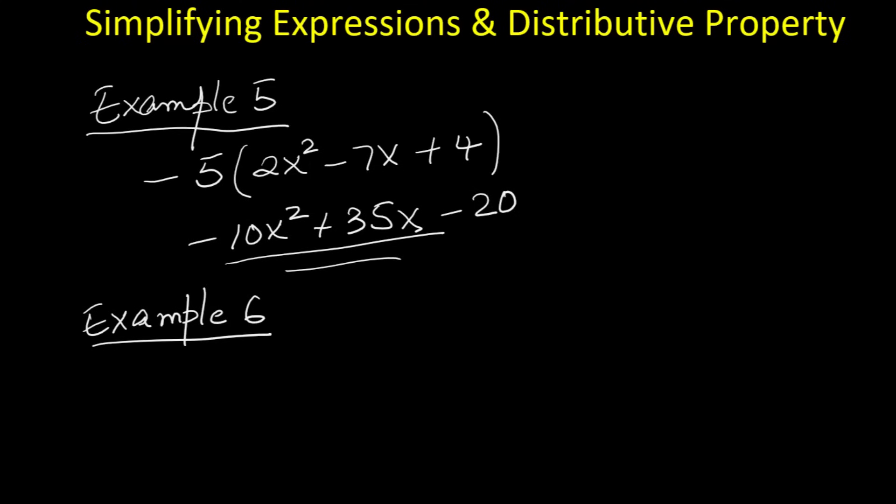Example 6. Now let us do a slightly longer problem: 3 times the quantity 4x plus 5 minus 2x plus 7. Step 1: Distribute the 3. 3 times 4x is 12x. 3 times 5 is 15. So the expression is now 12x plus 15 minus 2x plus 7. Step 2: Combine like terms. 12x minus 2x is 10x. 15 plus 7 is 22. So the final answer is 10x plus 22.